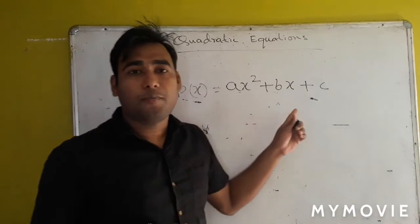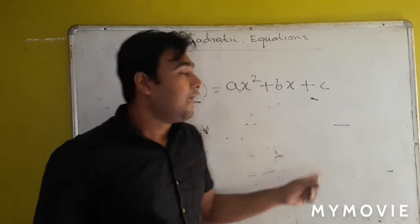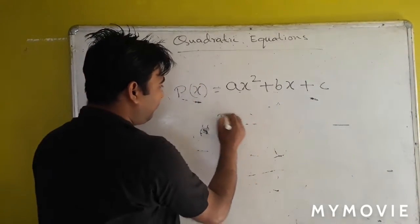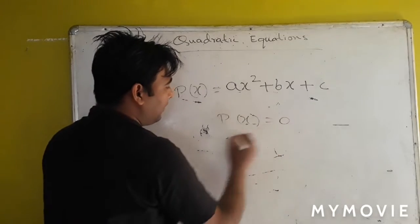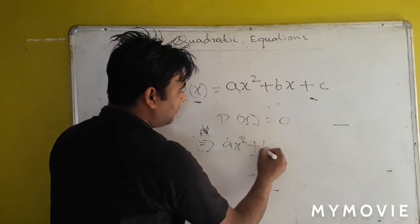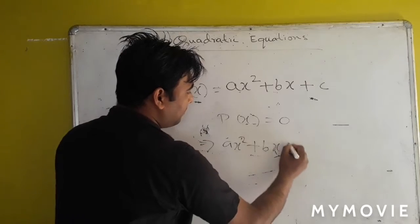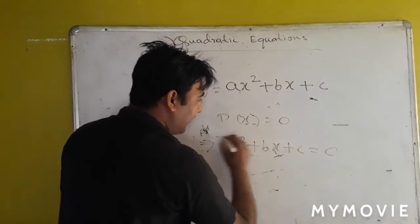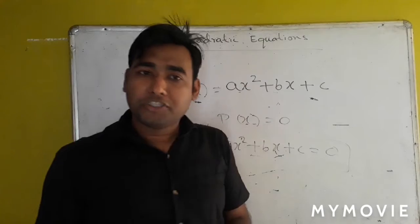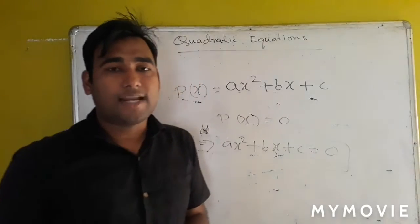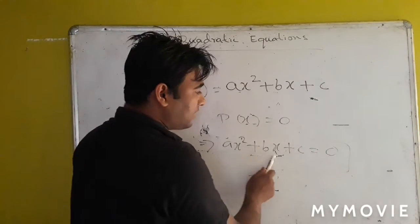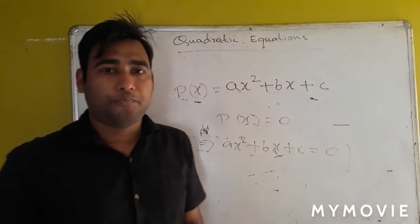This is the general form of a quadratic polynomial. The quadratic equation is: if p(x) equals 0, that is ax squared plus bx plus c equals 0, then it is called the quadratic equation. The general form of the quadratic equation is ax squared plus bx plus c equals 0.